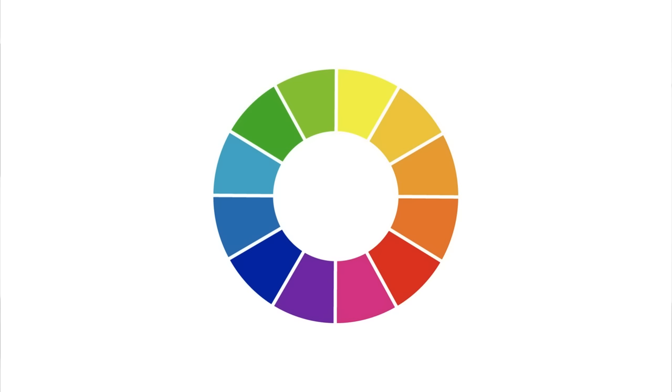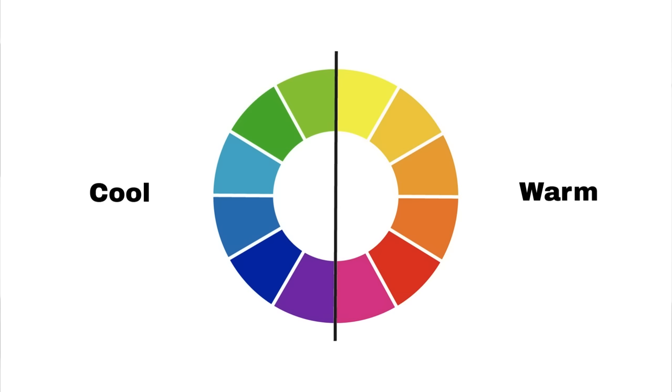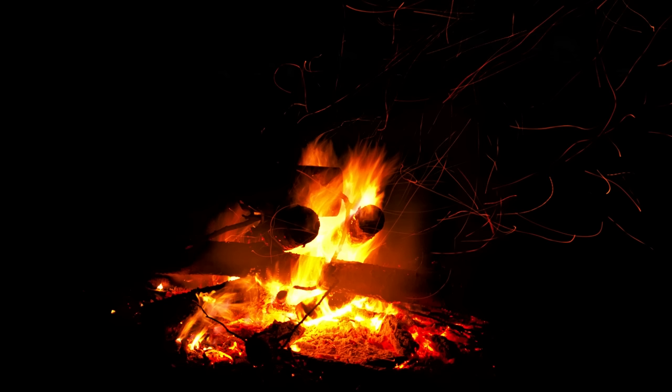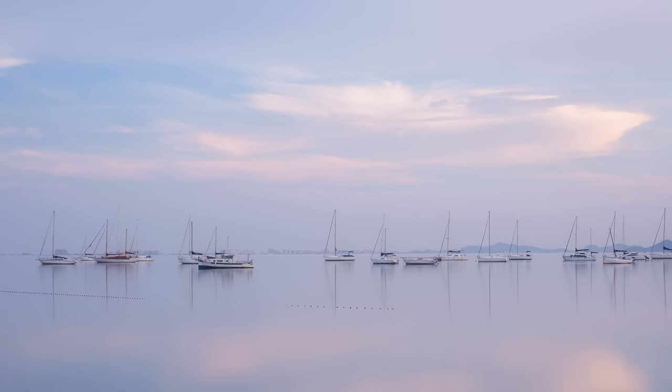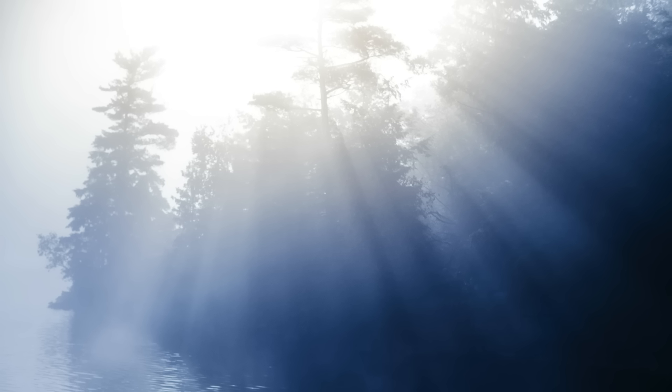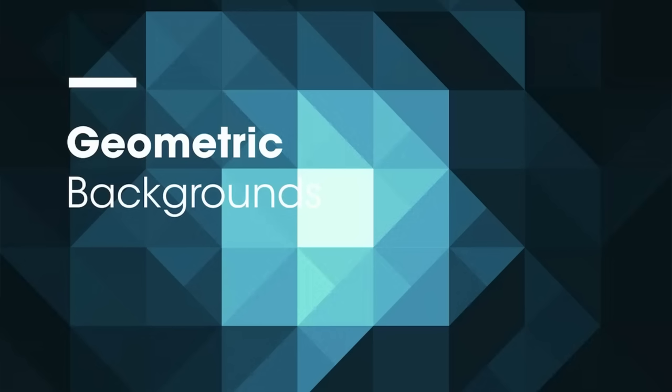The color wheel can also be split into two main temperatures: warm and cool. Warm colors are associated with the sun, energy, warmth, and fire — typically yellow, red, orange, and all their shades and tones. Cool colors are associated with calm, tranquility, and peace. When we combine hue, saturation, value, temperature, shade, tint, and tone, we find ourselves with a myriad of color combinations.